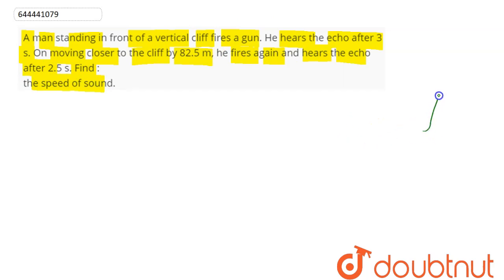Suppose this is the hill and here is the person at a distance x. He fires a gun and the sound travels the distance x plus x, which is 2x, and he hears the echo after 3 seconds. Distance by time equals speed, so V = 2x/3.